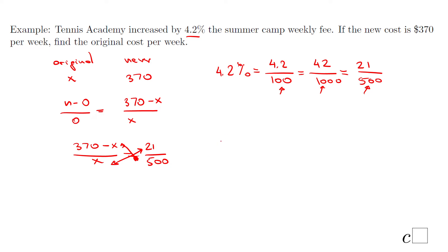So we have 370 minus x times 500 equals 21 times x. Distributive property here, and I'm going to use a calculator. 500 times 370, that will be 185,000 minus 500x equals 21x. So we want to solve for x. I will add 500x here to get rid of this negative 500x. Don't forget to do the same thing on the other side, and we have 185,000 equals 521x.